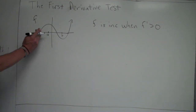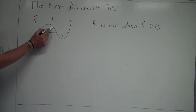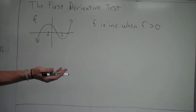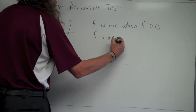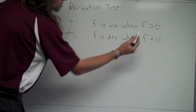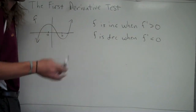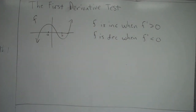Decreasing is where, moving from left to right, the y-values decrease in value. That happens between a and b — you can see the values going down. On that interval, the slopes are negative, so the derivative is negative. f is decreasing when f prime is less than zero. To determine whether f is increasing or decreasing, you need to find out whether f prime is positive or negative.